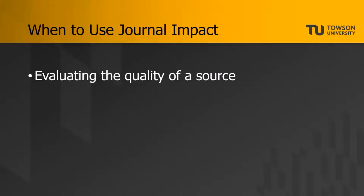There are a few ways that journal impact is useful. The first is evaluating the quality of a source. When you encounter any information source, whether it's a scholarly source or a background source, you should evaluate that source's credibility and relevance to your own research. Journal impact is one criterion you may use — if an article is published in a journal that scores highly on its impact metrics, that can increase your confidence about the quality of that source.